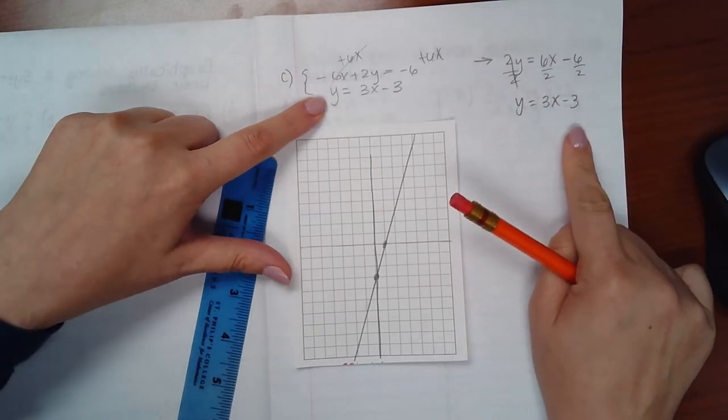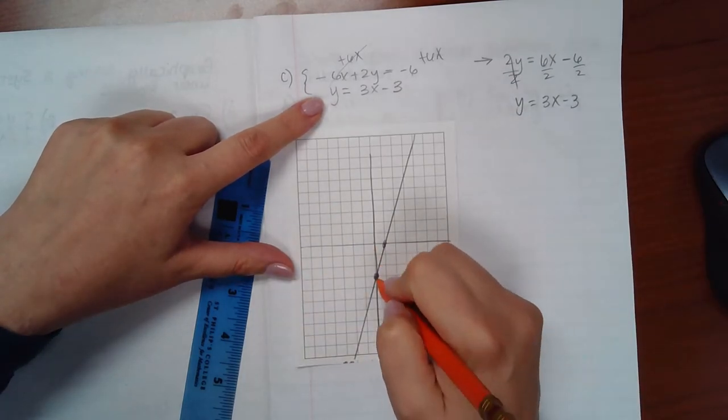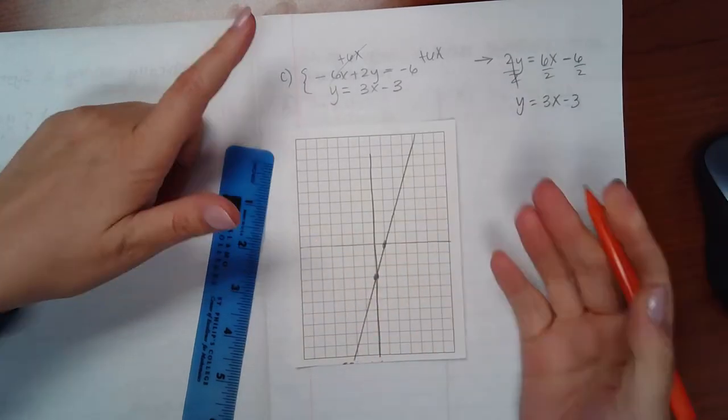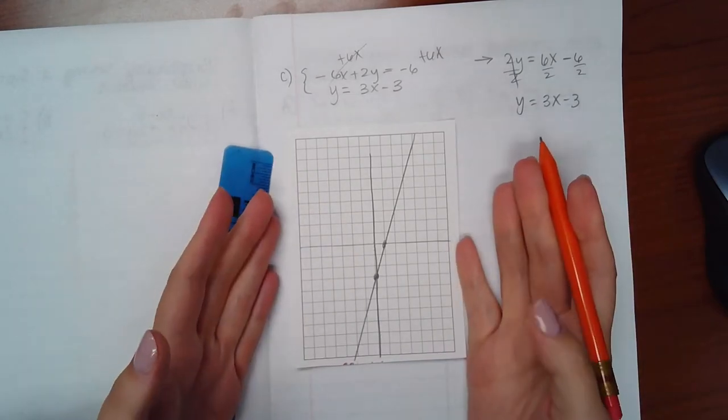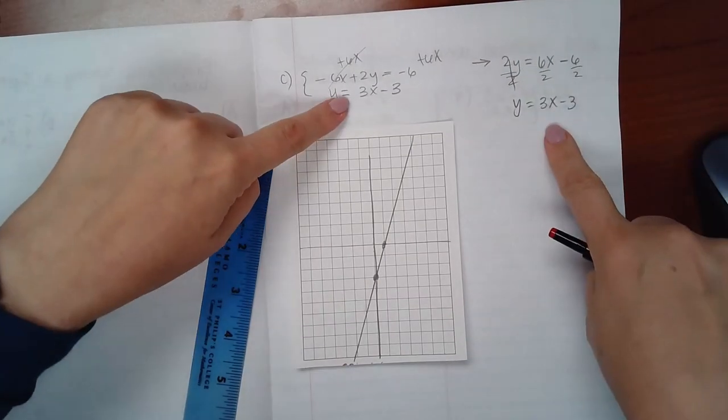Notice that it's the exact same as we had for the first equation. So when I try to graph it, I'm going to go down 3, up 3, and over 1, just the same. So on the graph, it looks like the same line. And it is the same line because it's the same equation.